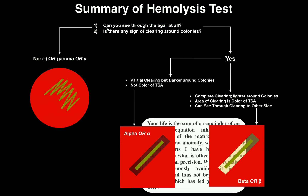On the flow chart, the first question you ask yourself is: can you see through the agar at all, or is there any sign of clearing around the colonies? If around the streak all you see is just the red of the blood agar, then it's clearly going to be gamma hemolysis — or no hemolysis — which is our negative result. You will not see any degradation of the red around the streak itself.